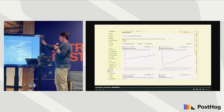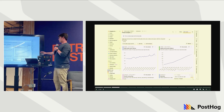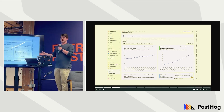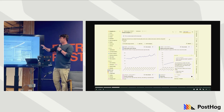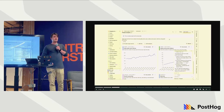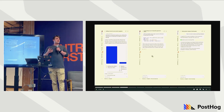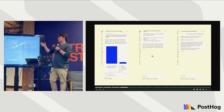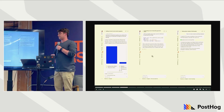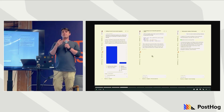This is a PostHog dashboard, and Max is the little hedgehog in the bottom right. We can ask in natural language a question to Max — in this case, what is my week over week percentage growth of users? We can see the chart there. Max has full context of the dashboard and all of the insights and data in your whole PostHog environment. We get 7.6% — Max can read our data.